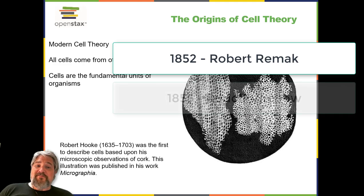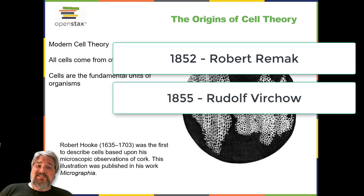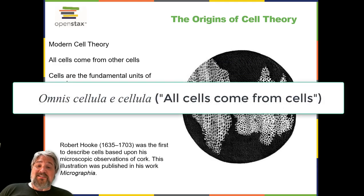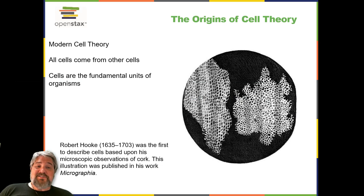Three years later, Rudolf Virchow (1821–1902), a well-respected pathologist, published an editorial essay entitled "Cellular Pathology," which popularized the concept of cell theory using the Latin phrase omnis cellula a cellula — all cells arise from cells — which is essentially the second tenet of modern cell theory. Given the similarity of Virchow's work to Remack's, there is some controversy as to which scientist should receive credit for articulating cell theory.